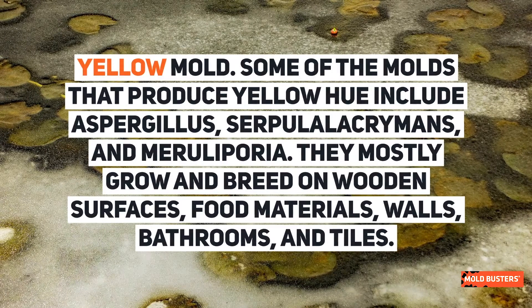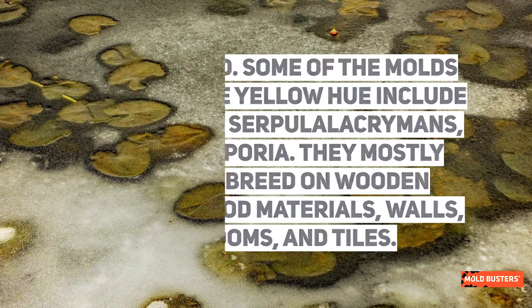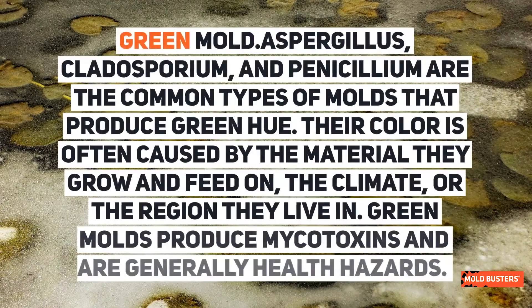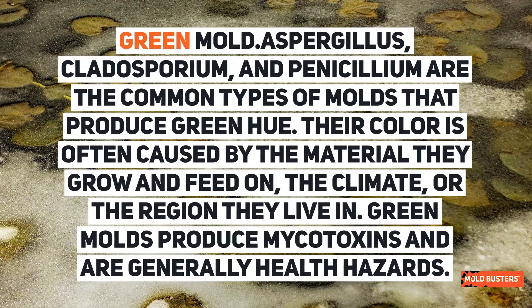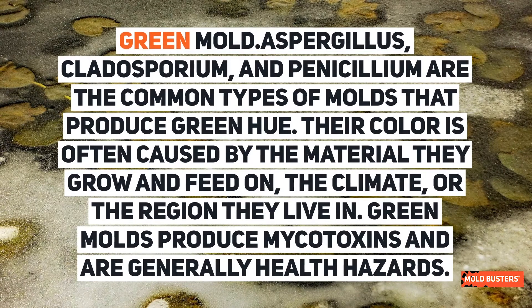Yellow mold: some of the molds that produce a yellow hue include aspergillus, serpola lacrimans, and meriuliporia. They mostly grow and breed on wooden surfaces, food materials, walls, bathrooms, and tiles. Aspergillus, cladosporium, and penicillium are also the common types of molds that produce a green hue.